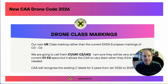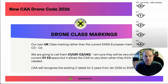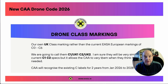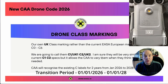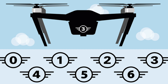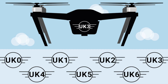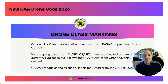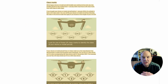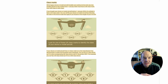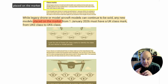The next key change is drone class markings. Currently there is a C0 to C6 marking on drones from the EU regulations, which we have adopted. We now have a transition period from January 2026 to January 2028 to transfer across to UK 0 to UK 6 markings. The wording has been changed since my last video to relate to the actual drones themselves. The key change — a few small words with a massive knock-on effect — is that while legacy drones or model aircraft can continue to be sold, any new model placed on the market from January 2026 must have a UK class marking.